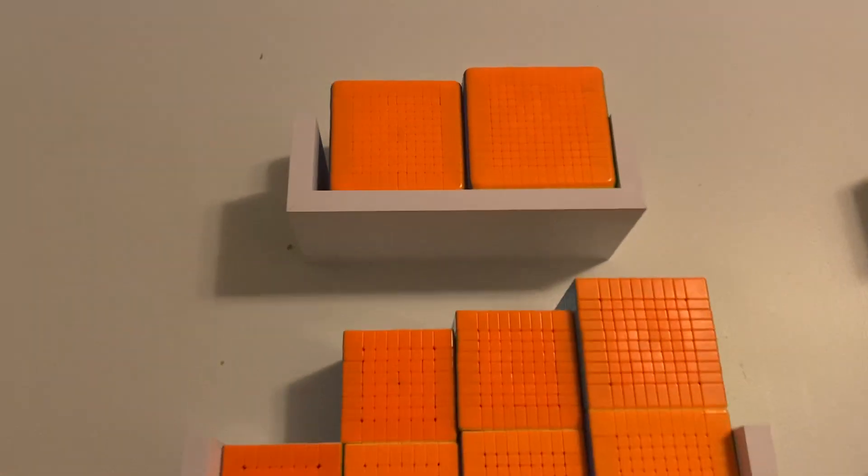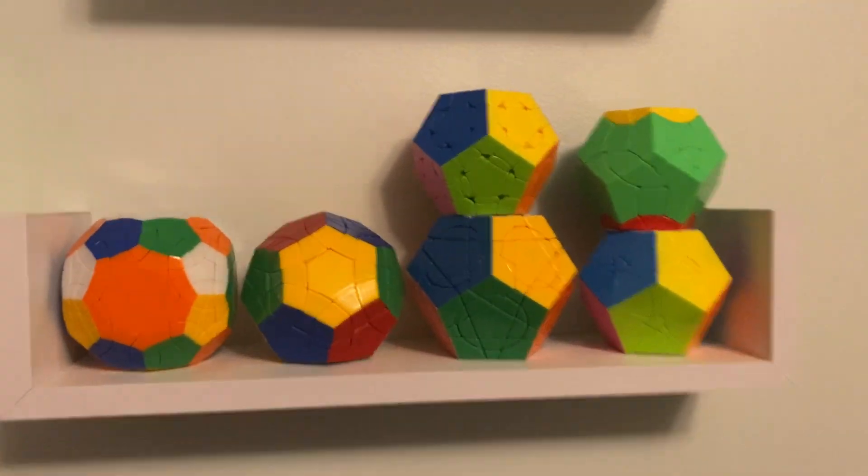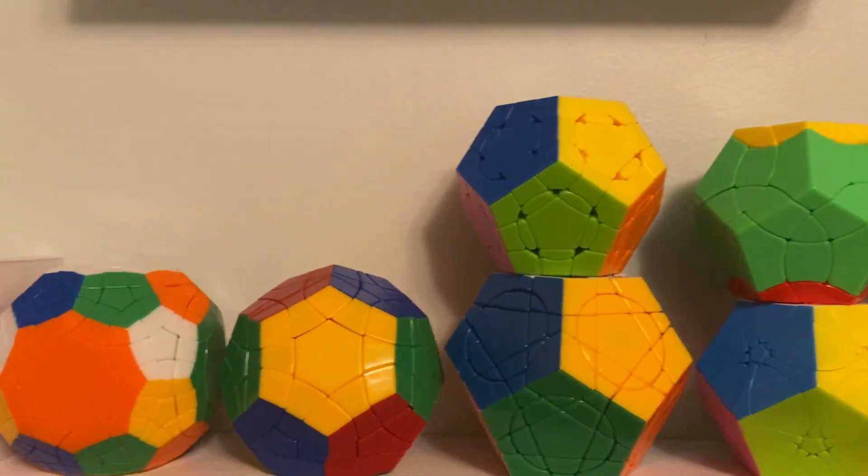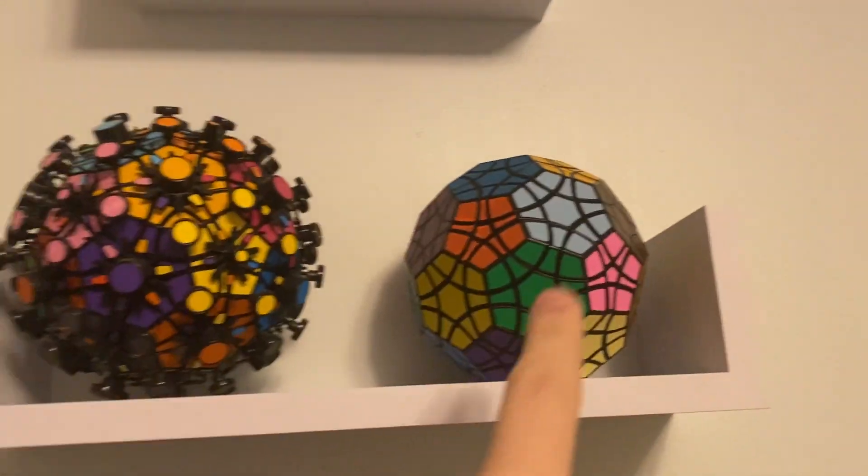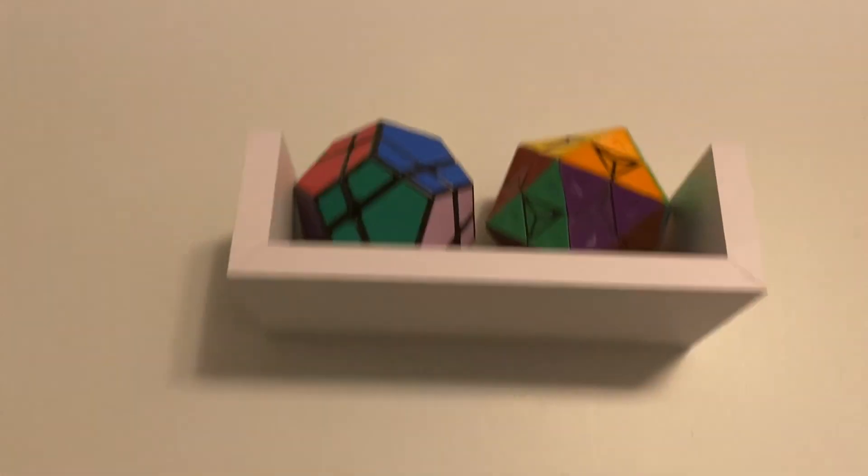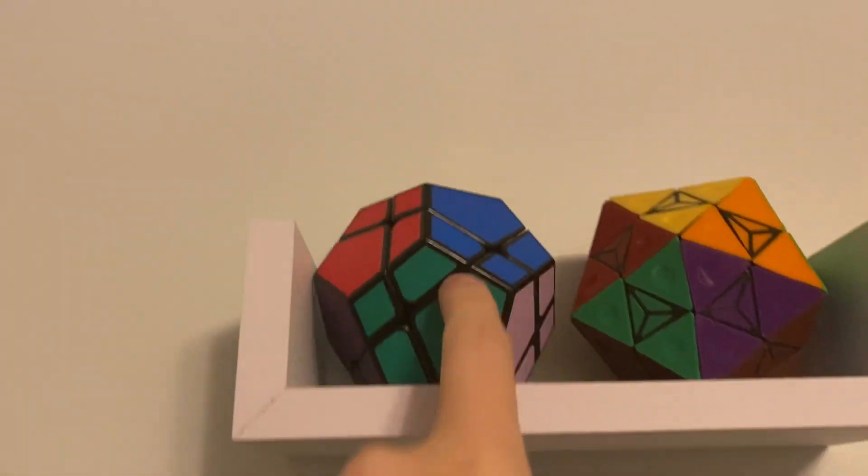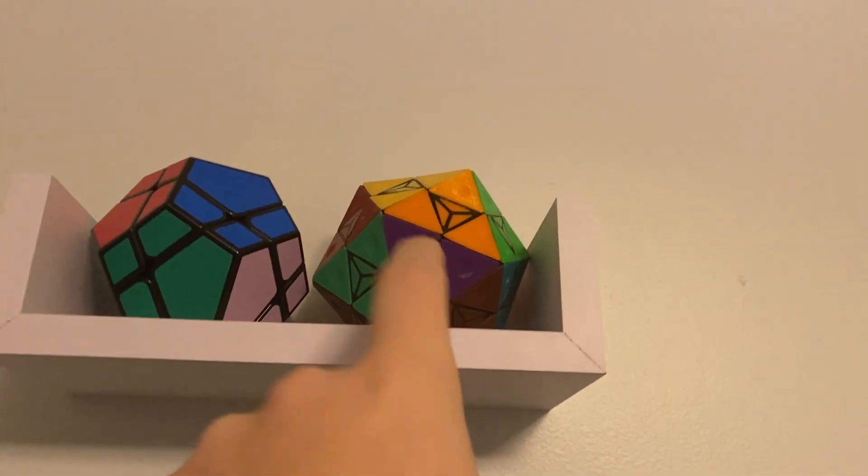Up here on the wall we got some more puzzles. We got some big cubes, some random dodecahedral puzzles, and a couple of other polyhedral puzzles. You got the Tutminx and the Wandering Tutminx. Then up here we got a Scube Ultimate and a 3D printed Dodgic Replica.